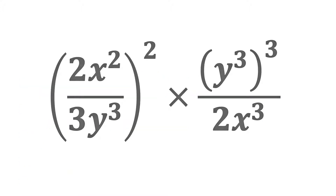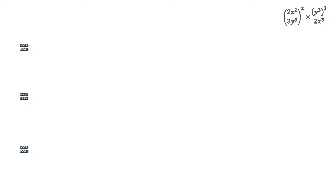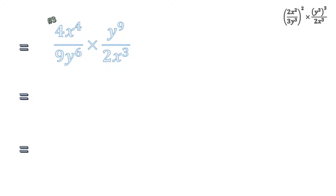In the final calculation, we have in brackets 2x squared divided by 3y cubed, all raised to the power of 2, times — above the line — y cubed raised to the power of 3, and below the line 2x cubed. The first step is to use our third rule and distribute the outside indices to get rid of the brackets, giving us 4x to the power of 4 divided by 9y to the power of 6, times y to the power of 9 divided by 2x cubed.